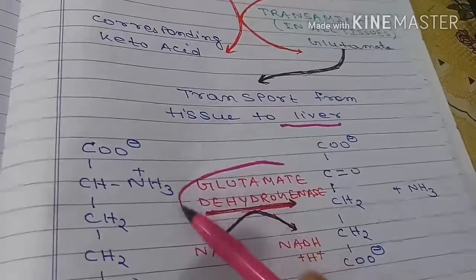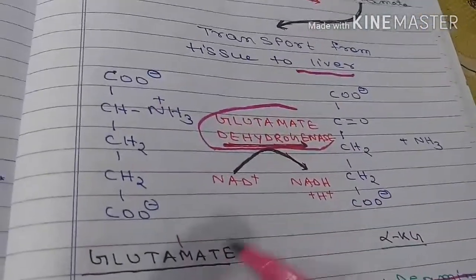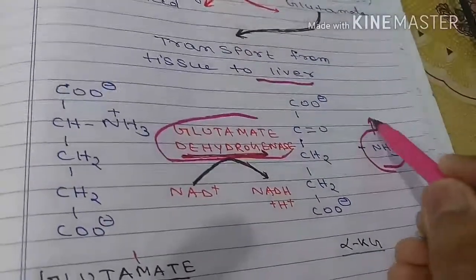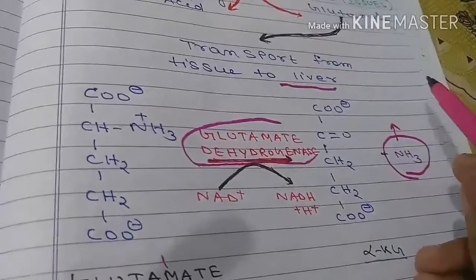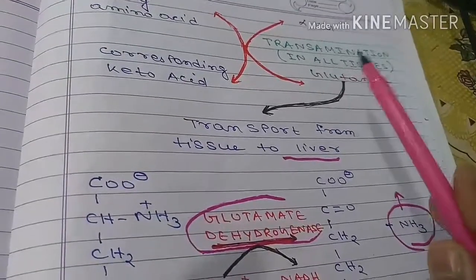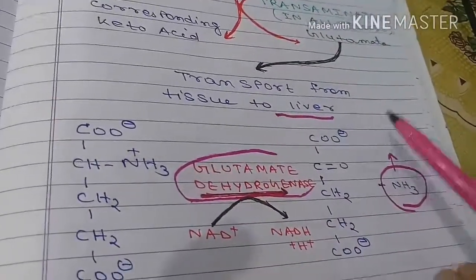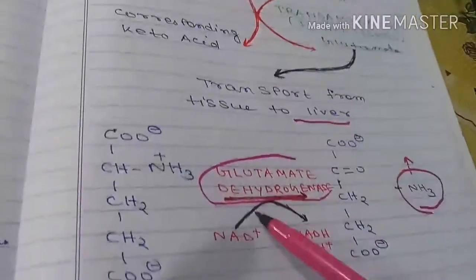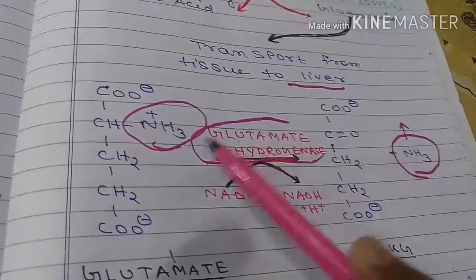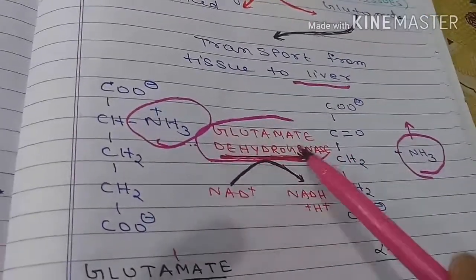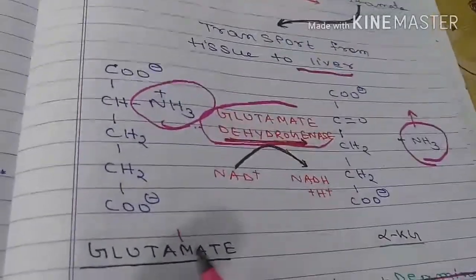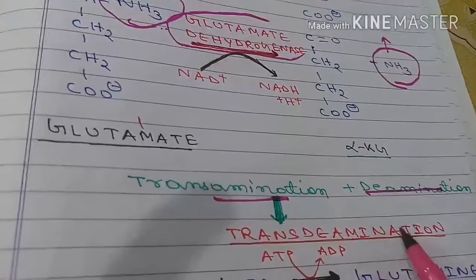In the liver, the enzyme glutamate dehydrogenase is present. Glutamate dehydrogenase converts glutamate back to alpha-ketoglutarate and releases ammonia in the liver. From this released ammonia, the urea cycle continues. This is the method by which ammonia is removed from tissues to the liver and then entered into the urea cycle. The deamination step here is catalyzed by glutamate dehydrogenase, which uses NAD as a cofactor.